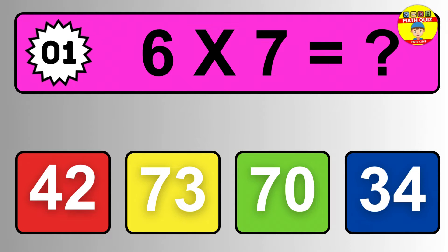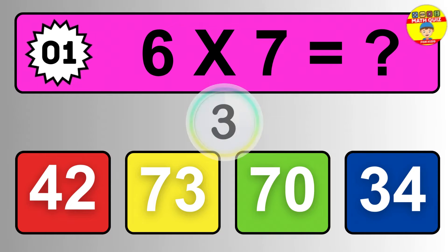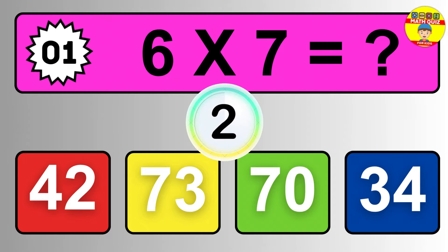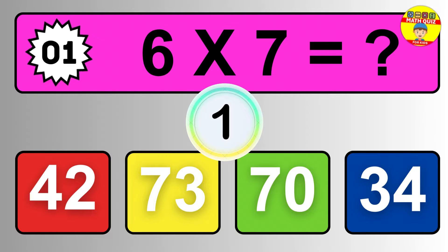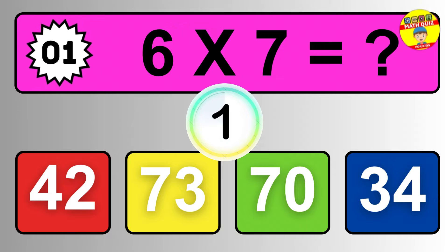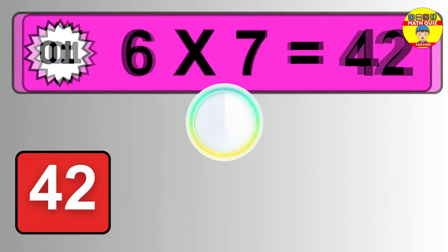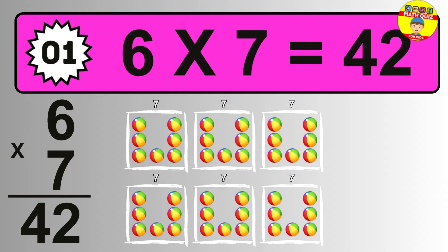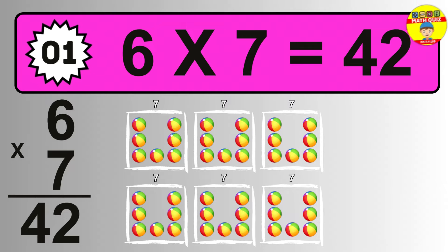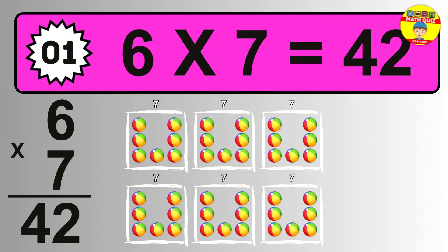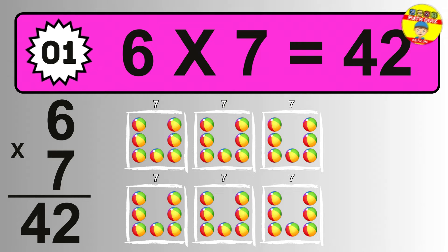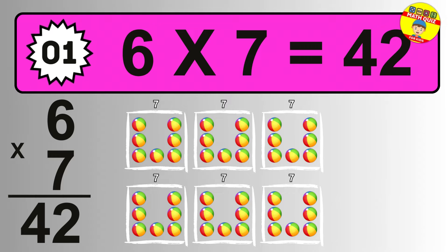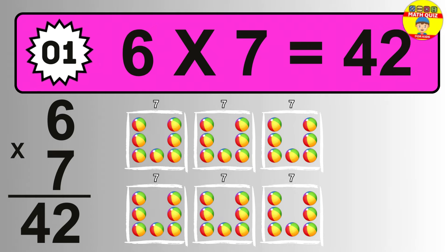Question one. Six times seven equals what? The answer is six times seven is 42. To calculate, we have six groups with seven balls each one. So how many balls do we have? 42 balls.